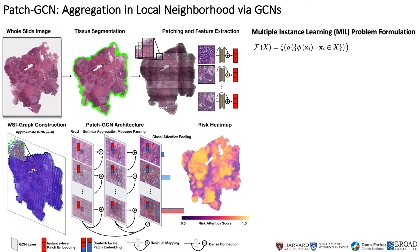To dive deeper into the connection between MIL and GCNs, note that in the standard problem formulation for MIL in the context of pathology, a ResNet-50 plus FC layer phi is used to process each patch independently to form instances in our bag. Then, a permutation invariant function row pools over the embeddings into the bag to form a bag-level embedding, followed by a bag-level classifier zeta.